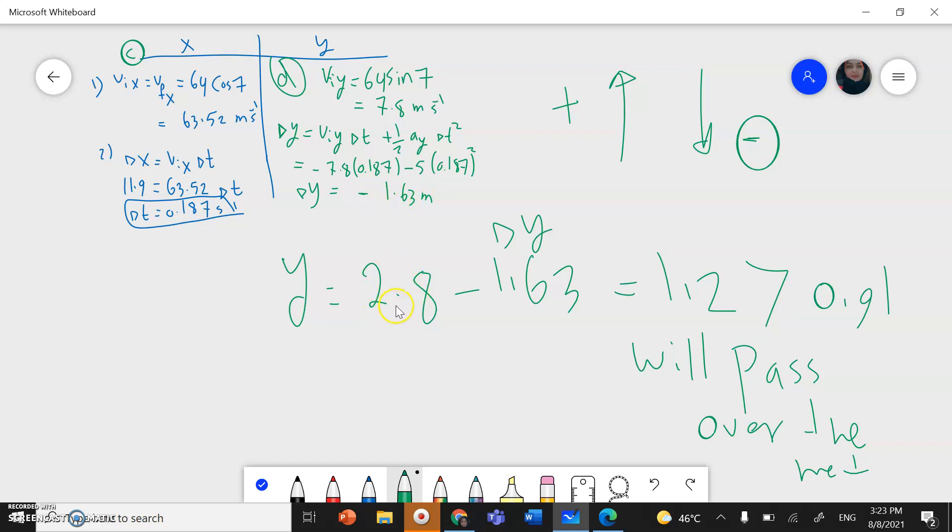The total height of the ball is 2.8 minus delta y. So the height of the ball is 1.2, which is greater than the height of the net 0.91. So the ball will pass over the net.